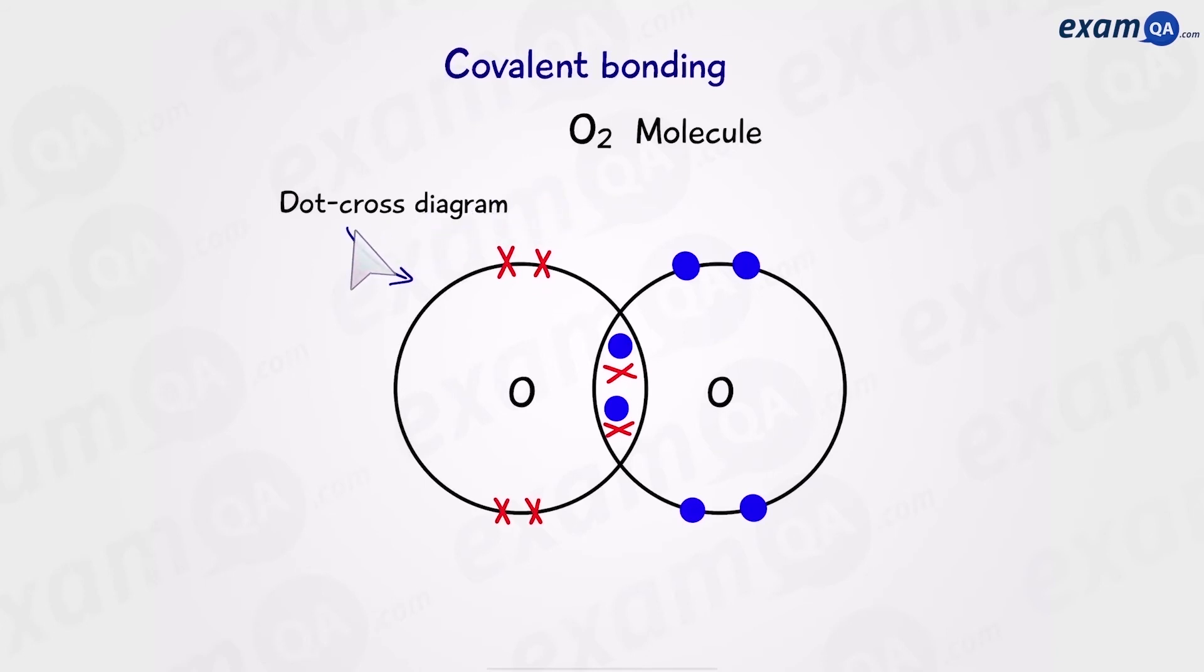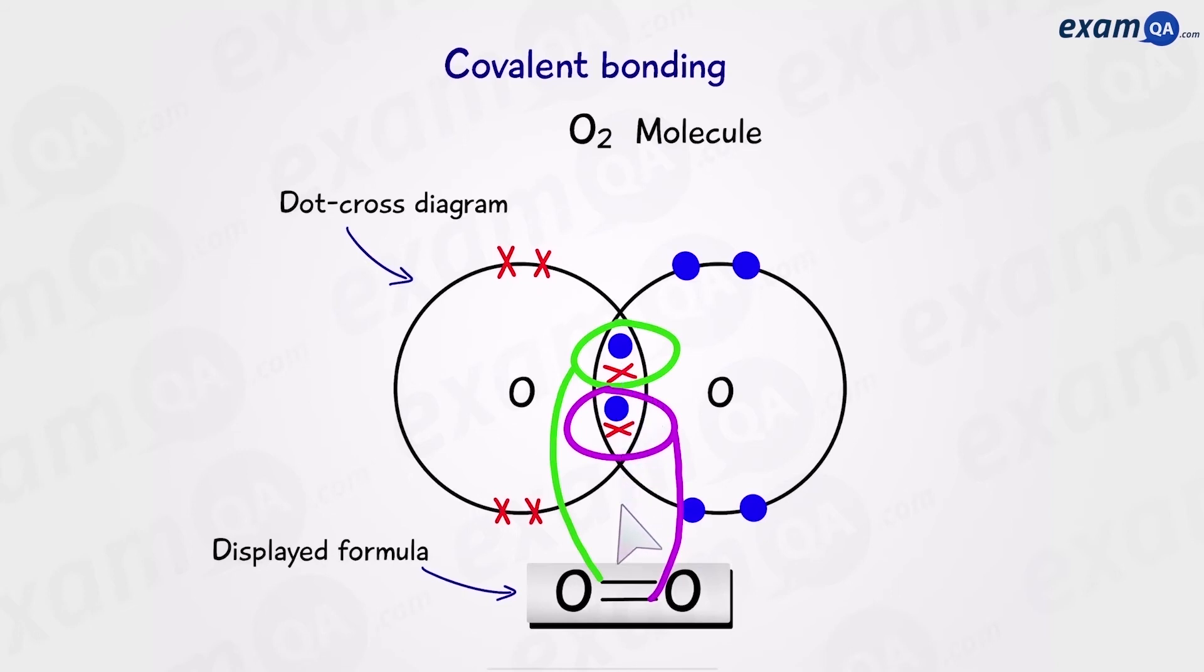This is the dot and cross diagram. And this is the displayed formula. Notice this time that we have two lines instead of one. This is because there are two shared pairs of electrons. And each pair is represented by one line.